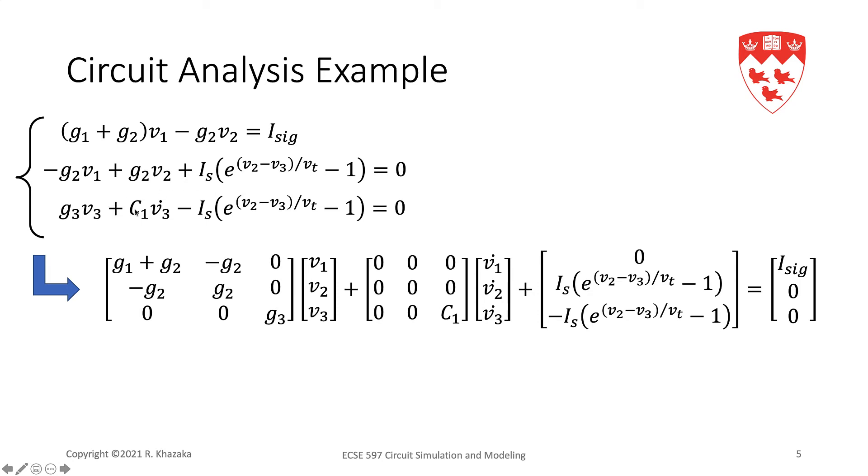If I look at the last equation, that would be the last row. So that's G3*V3 plus C1*V3_dot. And we have the nonlinear equation appearing in this vector over here. This is my nonlinear term equal to zero on the right-hand side.